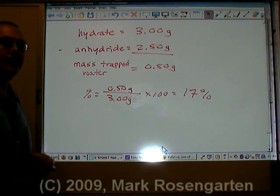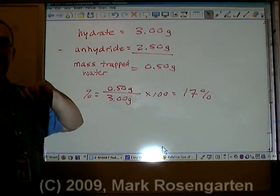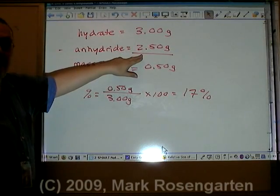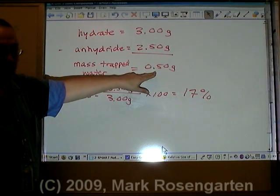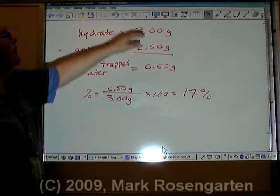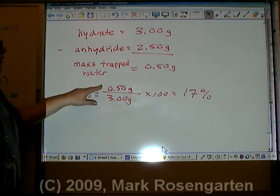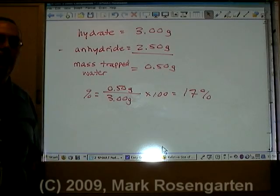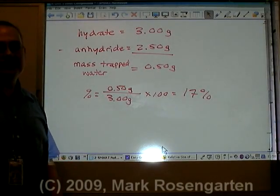So 17% of the hydrate's mass is water according to our experimental data. Three grams before we drove the water away, two and a half grams after we drove the water away, which means that half a gram of water was driven off. Half a gram of water made up the original 3 grams — 0.5 divided by 3 times 100 equals 17% water. And that's how you find the percent of water that's trapped inside of a hydrate.